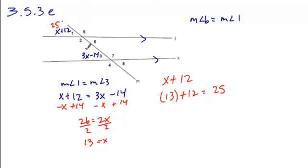So if this angle is 25, that means this corresponding angle, or sorry, this vertical angle, angle 6, is also going to be 25.